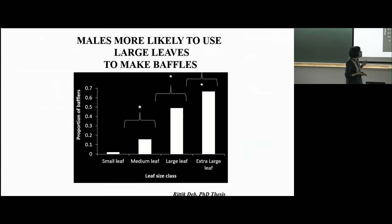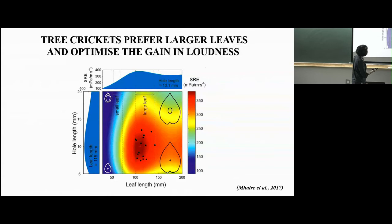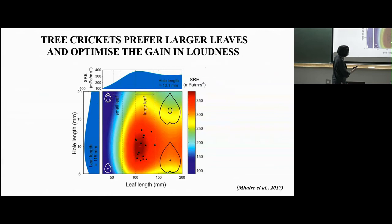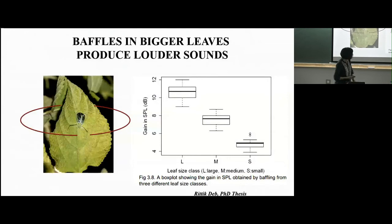If you give them a choice between a small and a large leaf, all 19 crickets tested went for the large leaf. They make a map of the large leaves, and they also make the hole of exactly the right size to fit them. They're very good at picking holes the right size. We leave you with open questions: How do tree crickets measure male size acoustically? How do they measure leaf size? How do they optimize hole size and position? Do they use acoustic feedback? Do they learn? Do they improve with age? We're trying to find answers to these questions.